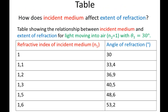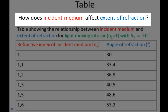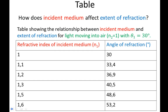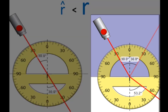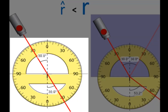In order to answer the question — how does incident medium affect extent of refraction — we now need to interpret the relationship between angle of refraction and extent of refraction. Angle of refraction is our indicator that tells us about the dependent variable, extent of refraction. But what does it tell us about extent of refraction? To help us think about that, let's add another column: extent of refraction. Write low and high at the extremes of this table — when are we getting the lowest extent of refraction and when are we getting the highest?